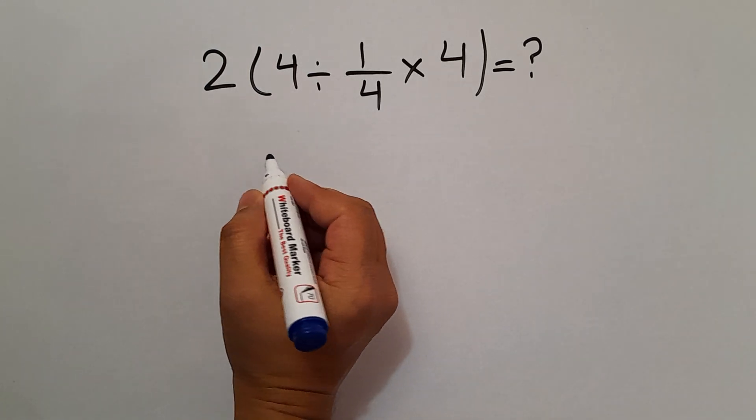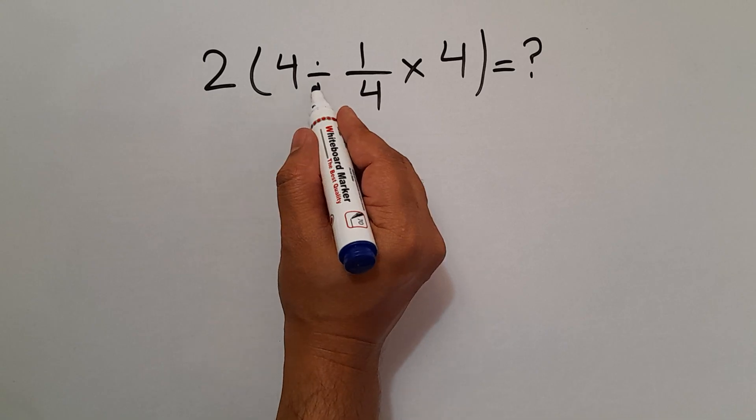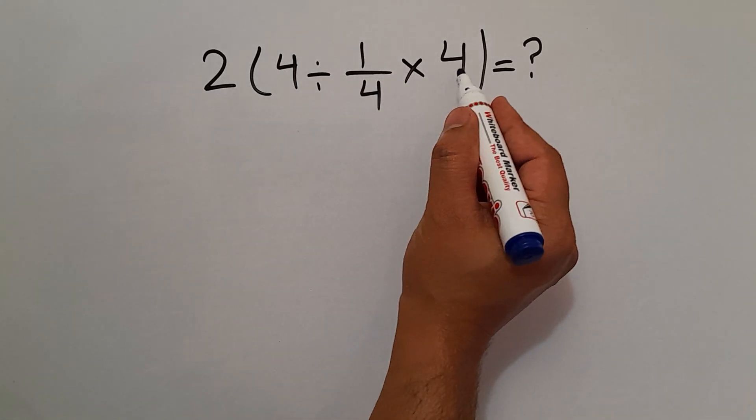Hi everyone and welcome to this video. In this video we want to find the value of this expression 2 times 4 divided by 1 over 4 times 4.